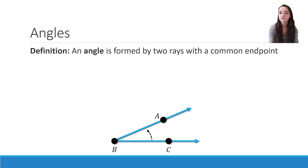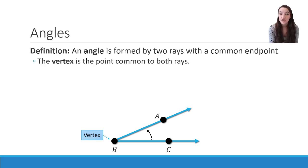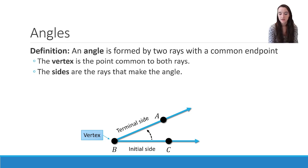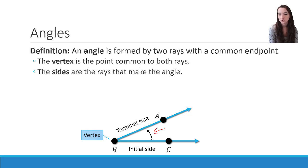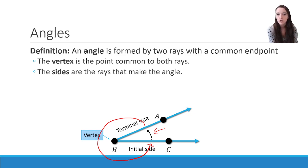Next, we're going to talk about angles. An angle is formed by two rays with a common endpoint. Here we have ray BC and ray BA with their common endpoint B. The vertex is that common endpoint, so B is the vertex of this angle. The sides are the rays that make up the angle — ray BC is the initial side and ray BA is the terminal side, because the arrow marking the angle shows we're starting at the initial side and ending at the terminal side.